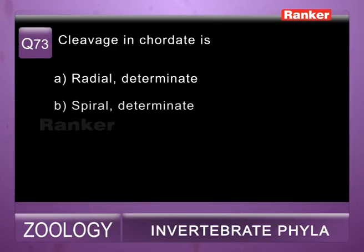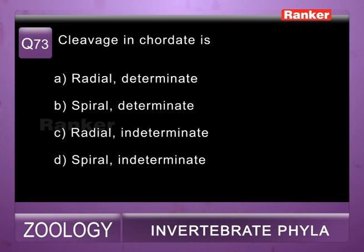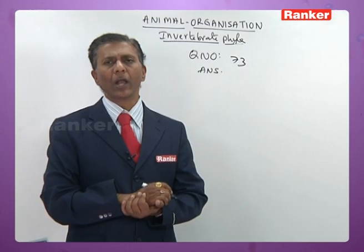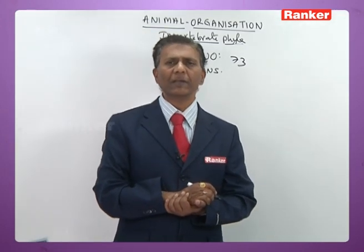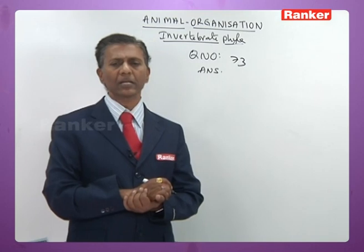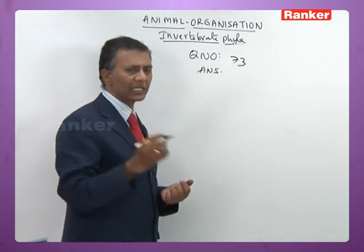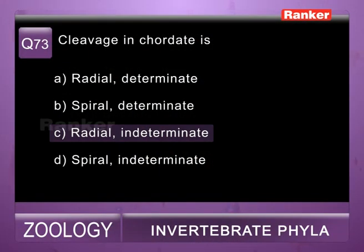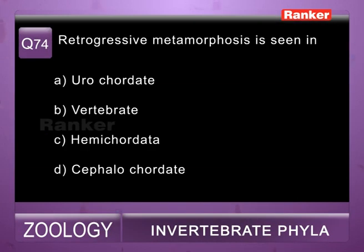Question seventy-three: cleavage in Chordata is — a) radial determinate, b) spiral determinate, c) radial indeterminate, d) spiral indeterminate. In all chordates and echinodermates, cleavage is radial and indeterminate. So seventy-third question correct answer is c.